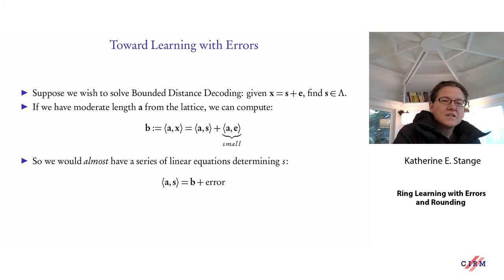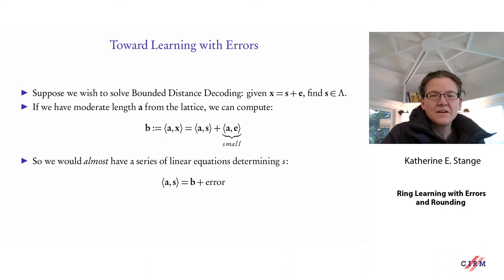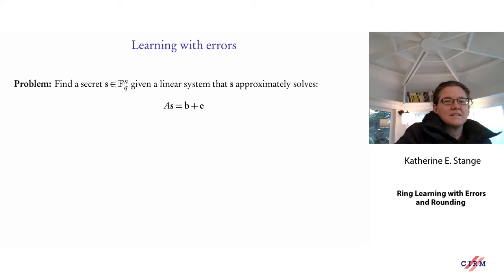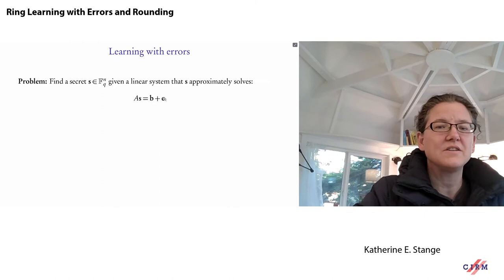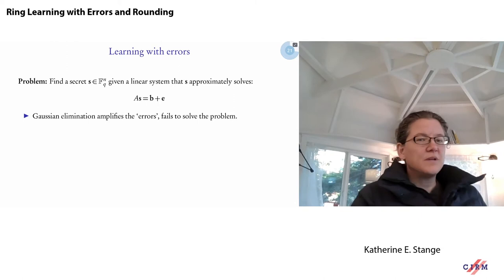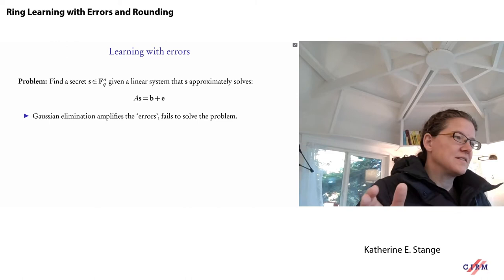The core problem is: we fix some secret s, work in a finite vector space F_q^n instead of R^n, and we're given a linear system that s approximately solves — a matrix A times s, plus an error vector e, giving output vector b. We only know b (not b and e individually), and Gaussian elimination would amplify those errors and completely fail to solve the problem.